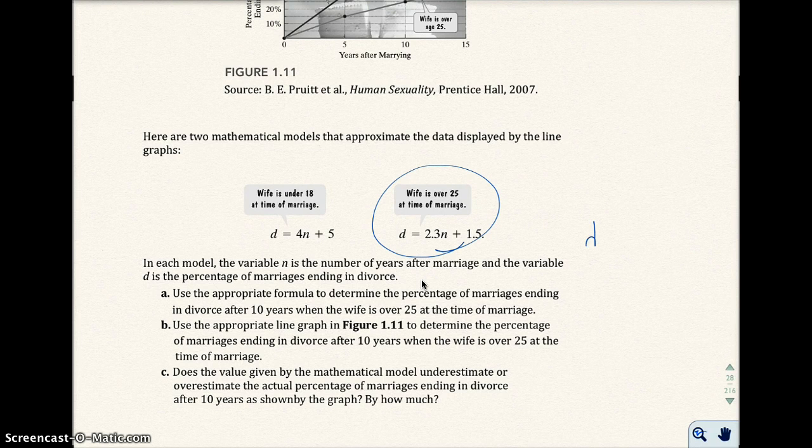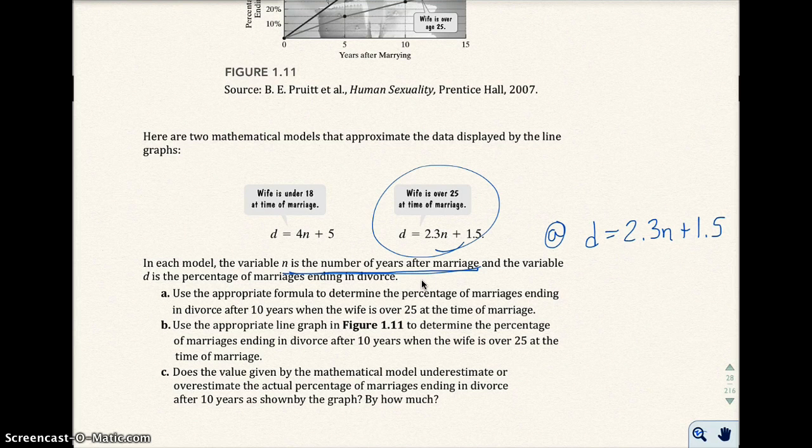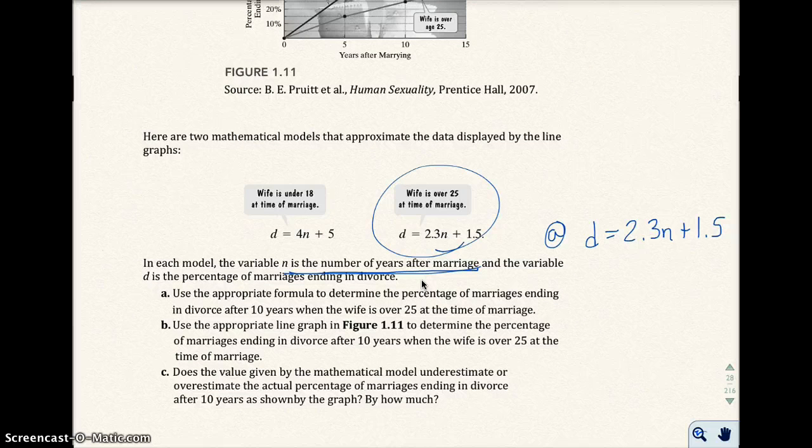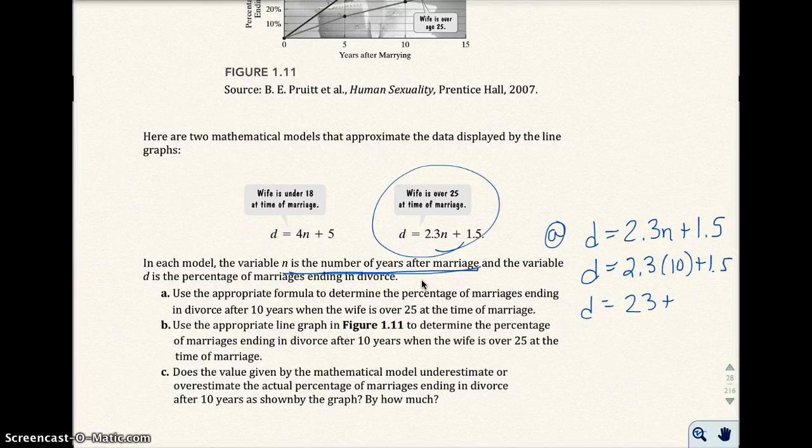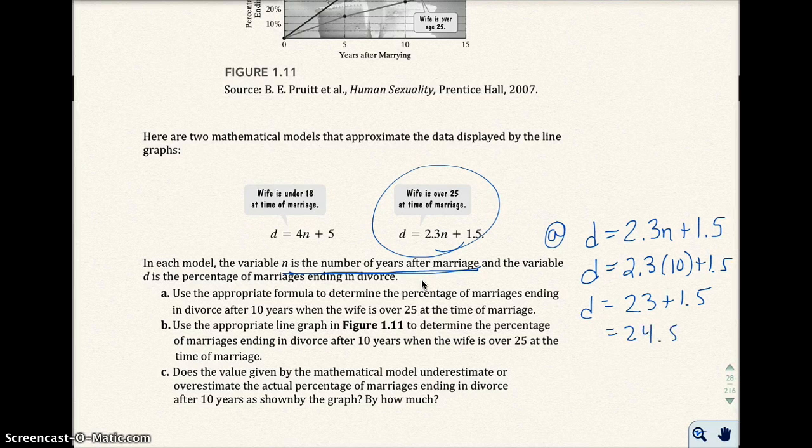So we know D equals, for part A, D equals 2.3N plus 1.5. And again, N represents the number of years after marriage. And so in part A, it's saying 10 years after marriage. So they're asking you what would the percentage of marriages ending in divorce after 10 years of marriage when somebody is over 25. So I put in 10 for N. I'm going to call the calculator out. So I get D equals 23 plus 1.5. And then I'd be 24.5.